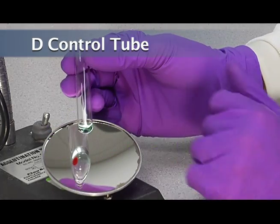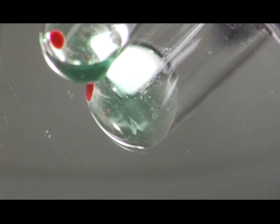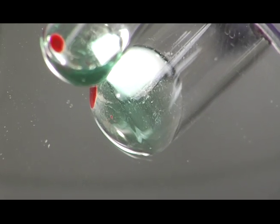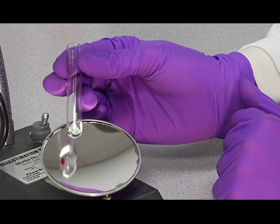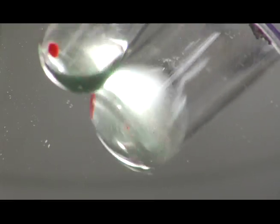And then we'll read the control tube as well. And tap that reaction off. You can see the check cells lifting off.